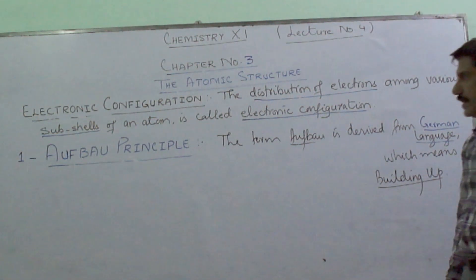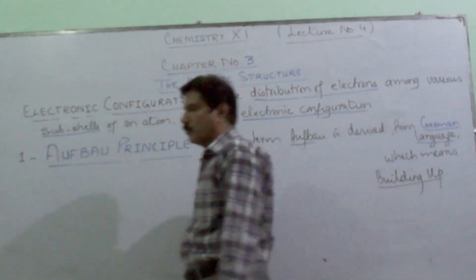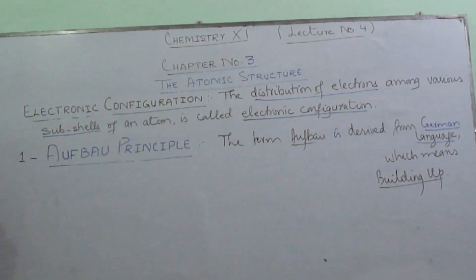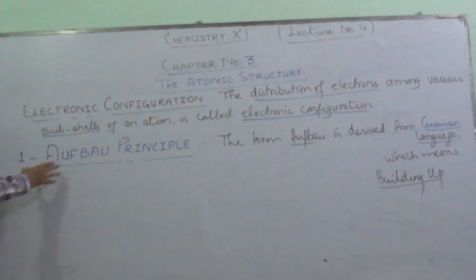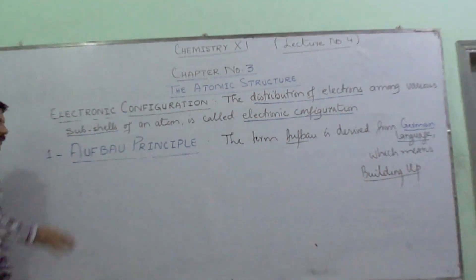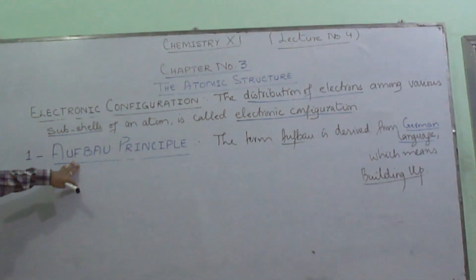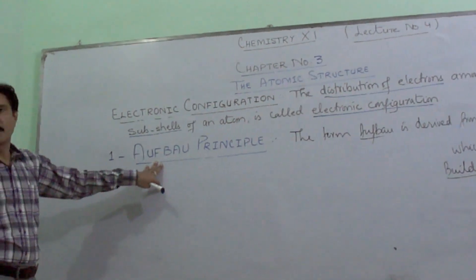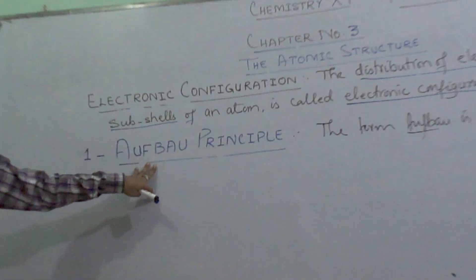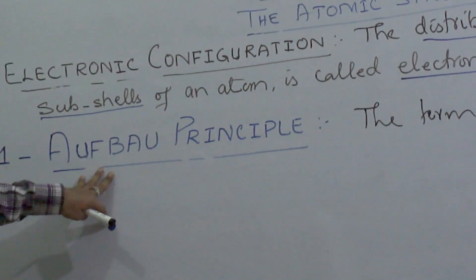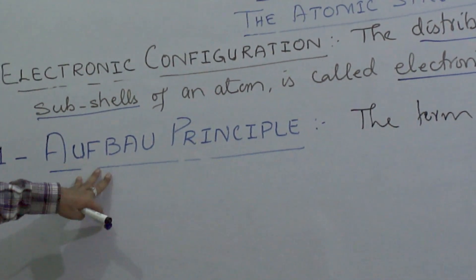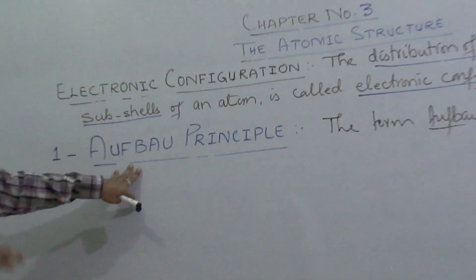As I have told you earlier, there are various rules or principles for writing the electronic configuration of elements. Out of which the first one, the basic principle, is the Aufbau principle. The Aufbau principle was given by Linus Pauling.